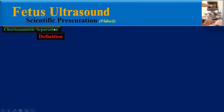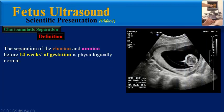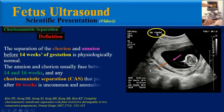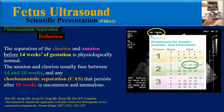What is the definition of chorioamniotic separation? Chorioamniotic separation before 14 weeks of gestation is physiologically normal. Separation that persists after 16 weeks is uncommon and considered anomalous.